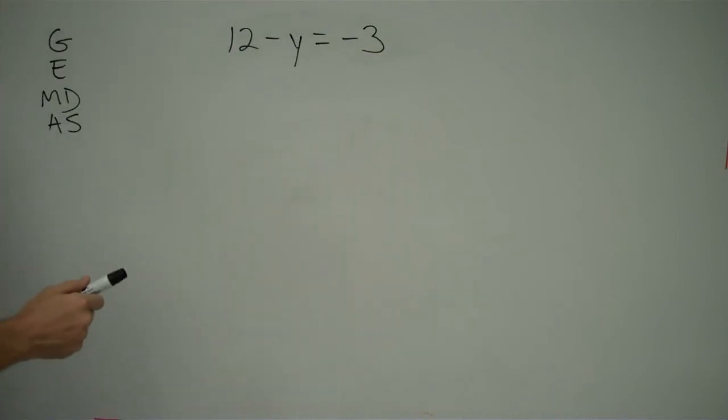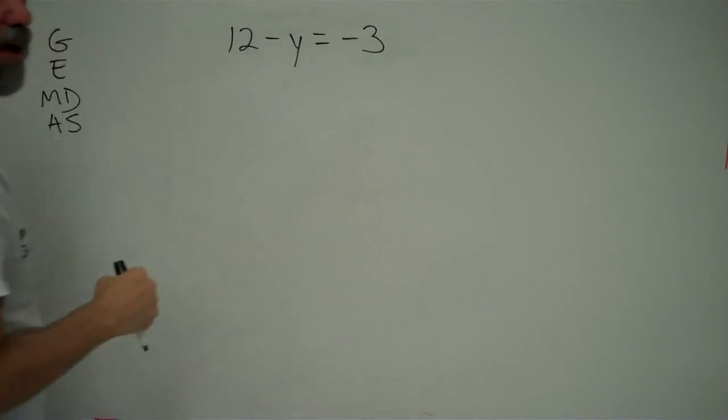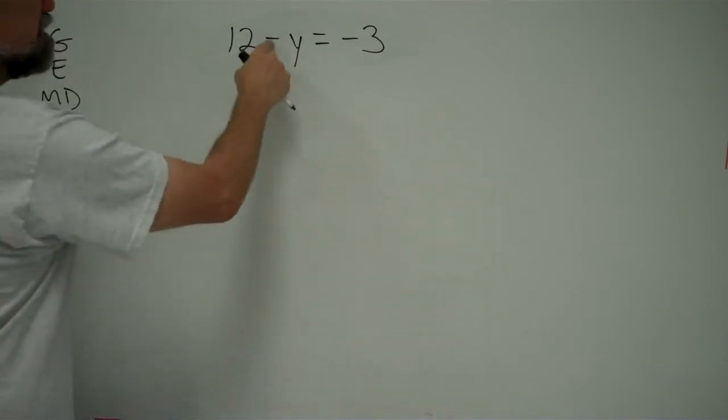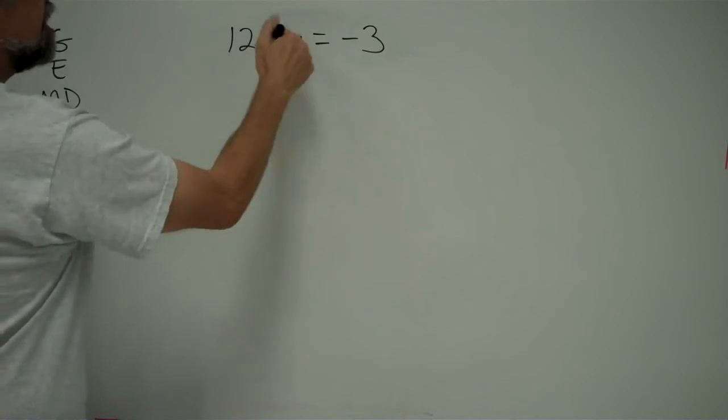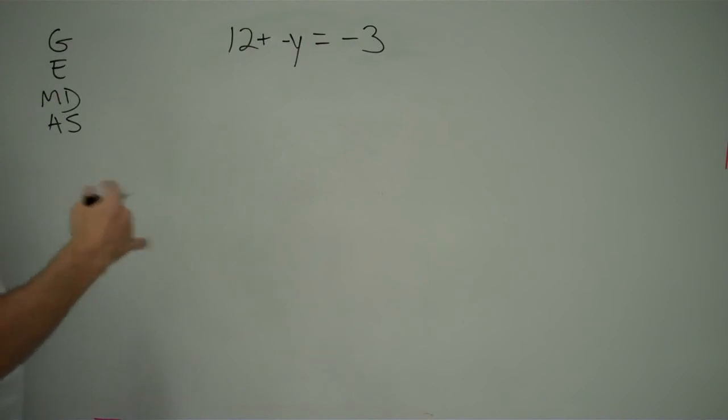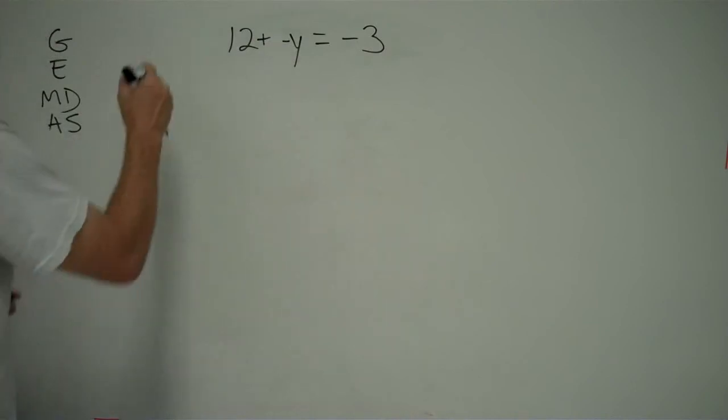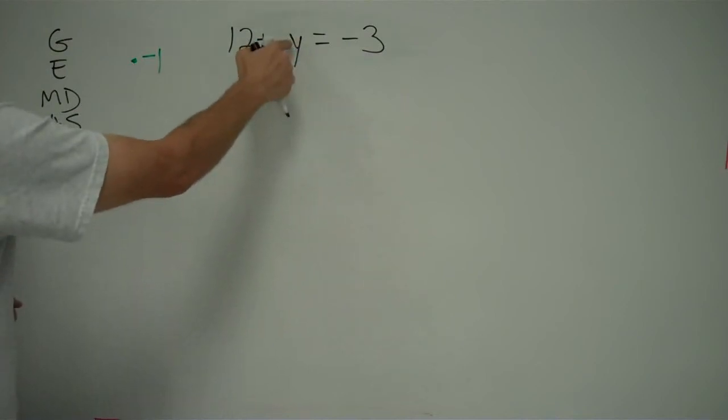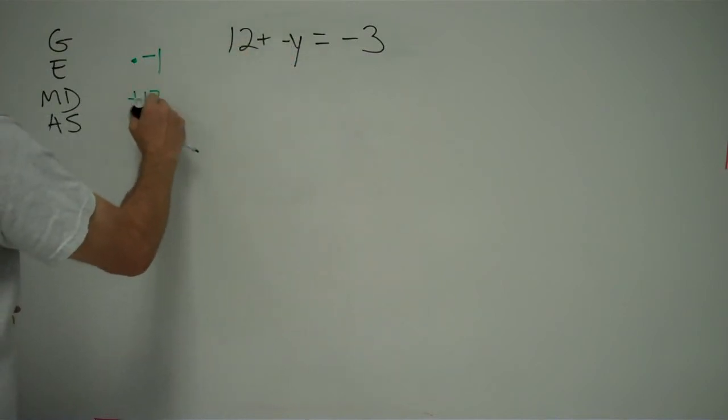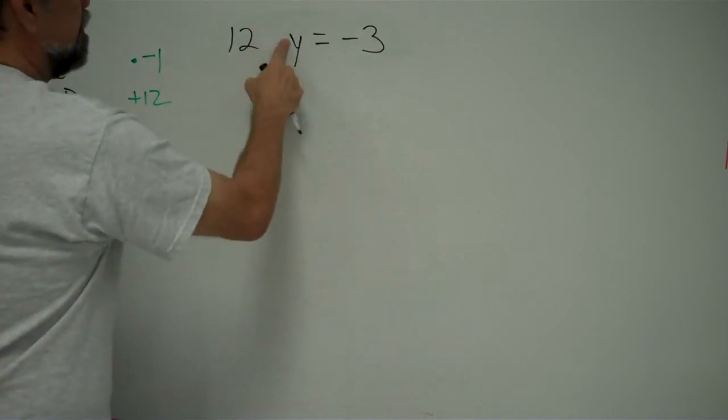And what's happening to y is... The first thing that's happening to it is it's being multiplied by negative 1. Because saying minus y is like saying plus negative y. Remember, minus and plus negative are the exact same thing. They're equivalent expressions. So, the first thing that's happening to y is we're multiplying it by negative 1. The second thing happening to y is we're adding 12.